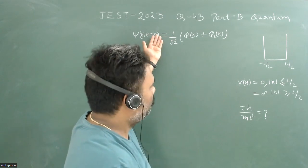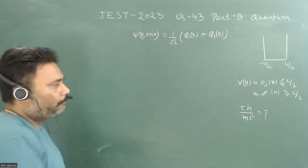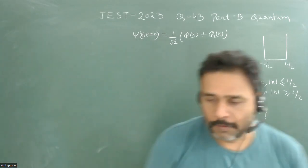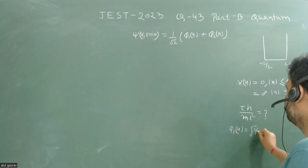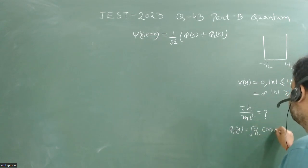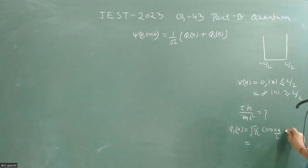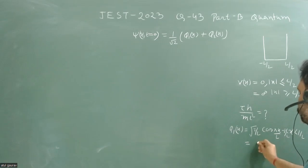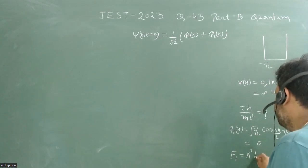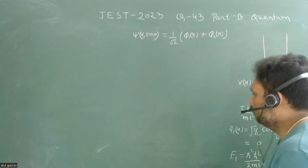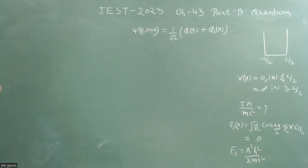Since we are given the state at t = 0, we will go for time evolution and then calculate τ. Before proceeding, φ1(x) = √(2/L) cos(πx/L) for x between −L/2 and +L/2, and zero otherwise, with associated energy E1 = π²ℏ²/(2mL²).